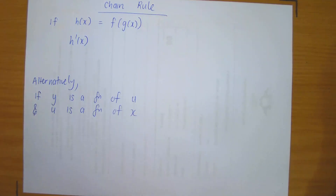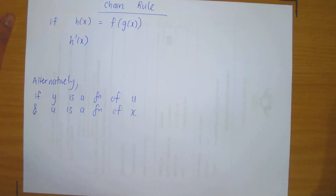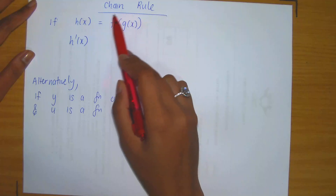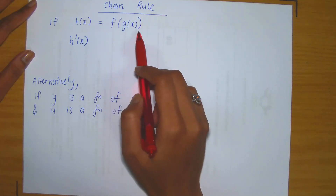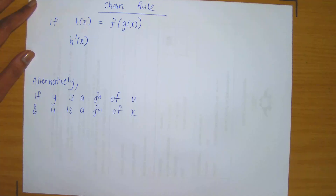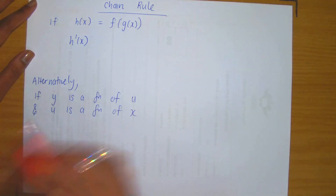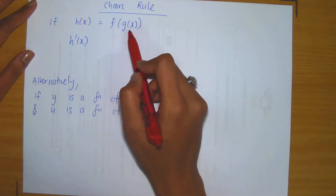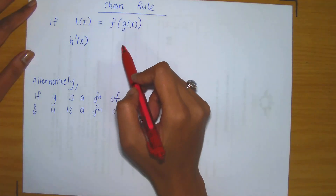In this video lecture, I'm going to be discussing the chain rule. The chain rule is a differentiation rule that is applied to a function of the following type — meaning it is the composition of two functions. If you've forgotten about the composition of two functions, please return to that section and recall how composites work.